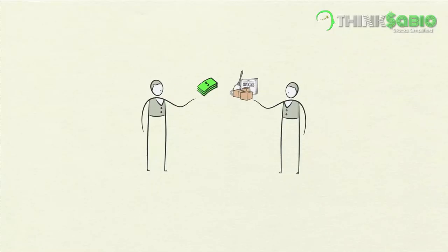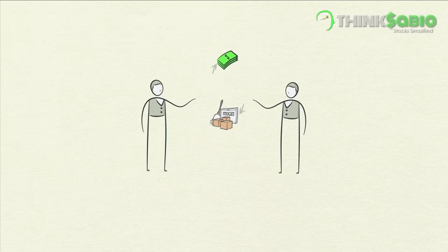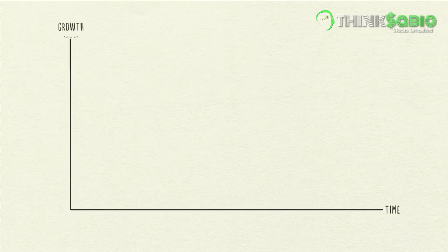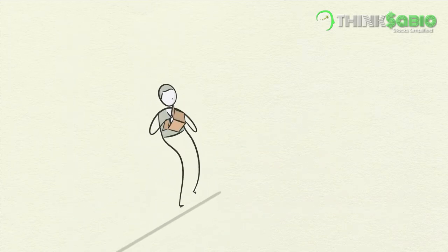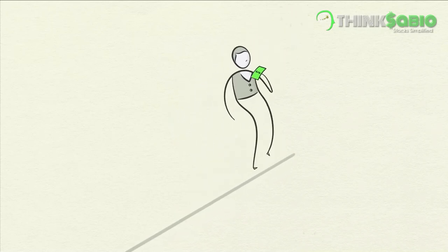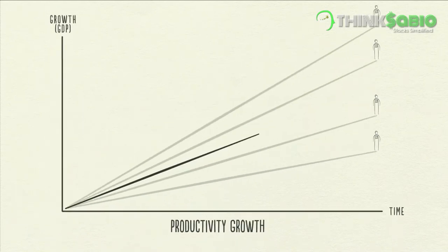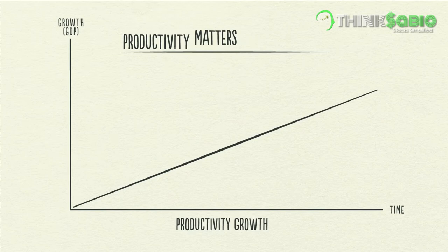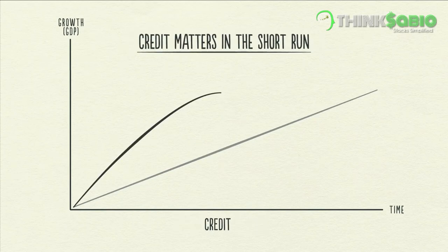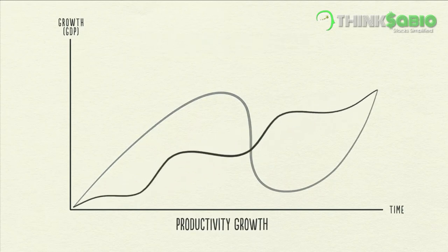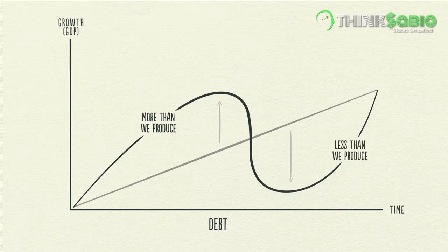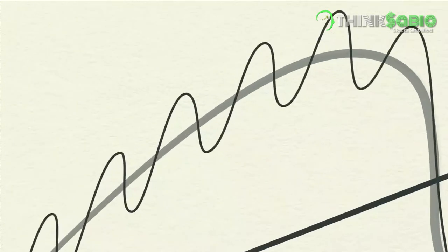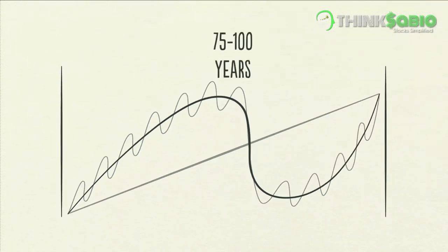In a transaction, you have to give something in order to get something, and how much you get depends on how much you produce. Over time, we learn, and that accumulated knowledge raises our living standards — we call this productivity growth. Those who are inventive and hardworking raise their productivity and living standards faster than those who are complacent and lazy. Productivity matters most in the long run, but credit matters most in the short run, because productivity growth doesn't fluctuate much. Debt swings occur in two big cycles: one takes about 5 to 8 years, and the other takes about 75 to 100 years.